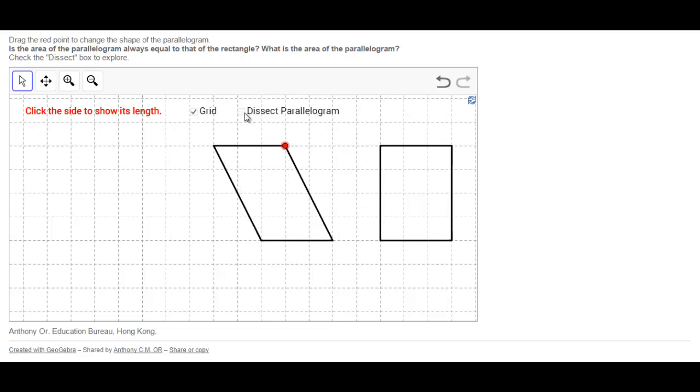When you're ready, just click on Dissect Parallelogram. When you dissect a parallelogram, first of all, it divides your parallelogram into two chunks, two or more chunks. And it also brings up this little slider, which allows you to slide these two chunks over here into a comparison with the rectangle.